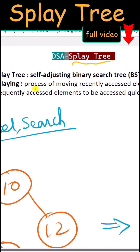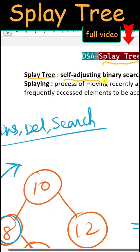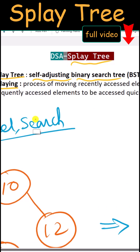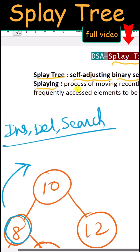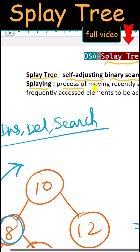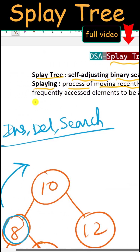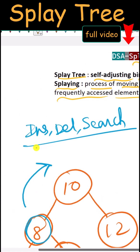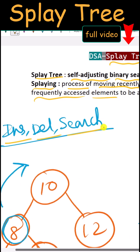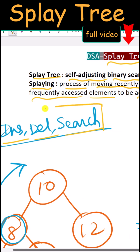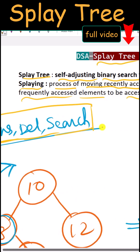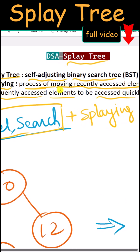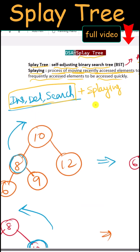The splay tree is a self-adjusting binary search tree, similar to the AVL or the red-black tree. Splaying is the process of moving recently accessed elements to the root so that frequently accessed elements can be accessed quickly. We can perform insertion, deletion, and search operations, but with each operation we also have to perform splaying — moving recently accessed elements to the top.